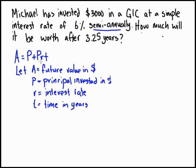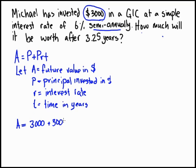We know what the question is asking for and we have the formula, so now we can put in numbers. The future value equals P plus P times R times T. P, the principal amount invested, is $3,000. R is 6%, which we write as a decimal: 0.06. And T is the time it was invested, which is 3.25 years.